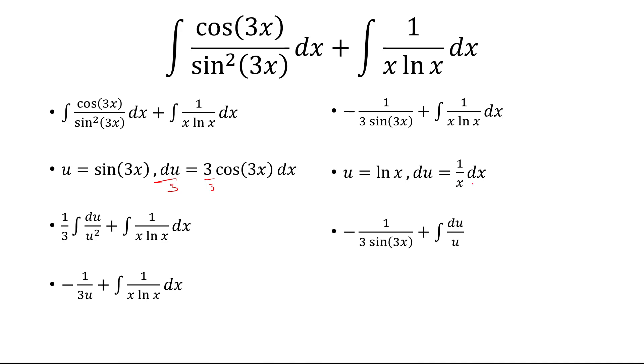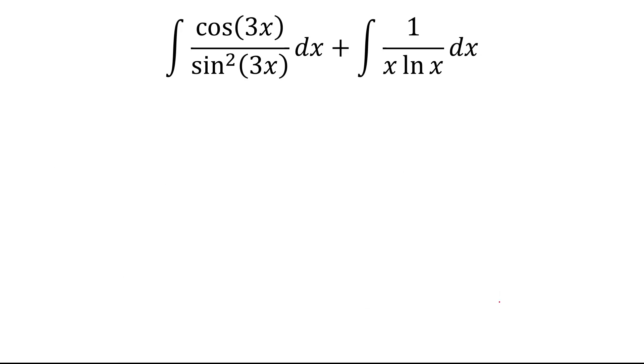So we have integral du over u, which is ln absolute value of u, and then we'll add a constant C. The last step is to replace what u was. We said u was natural log of x, and so this is our final answer.